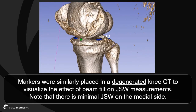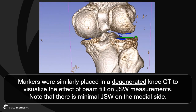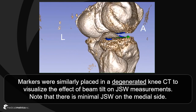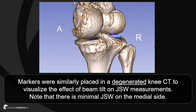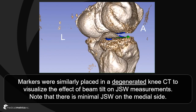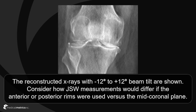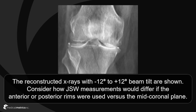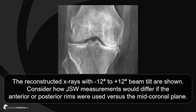Markers were similarly placed in a CT exam of a degenerated knee to visualize the effect of beam tilt on joint space width measurements. Note that there is minimal joint space width on the medial side. Digitally reconstructed radiographs with between minus 12 and plus 12 degrees of beam tilt are shown. Consider how joint space width measurements would differ if the most prominent radiographic shadow was used versus the mid-coronal plane method.